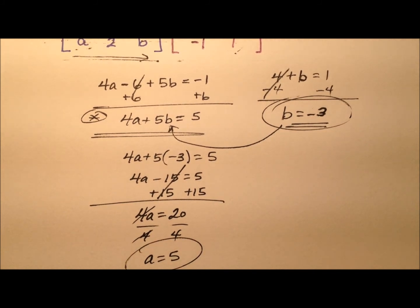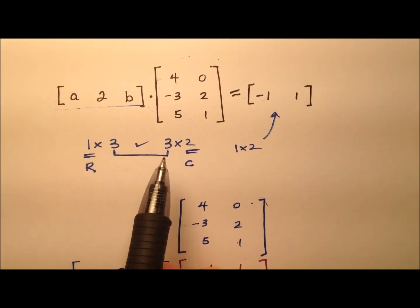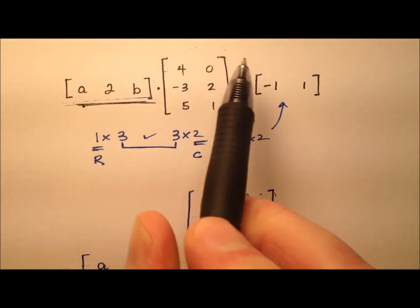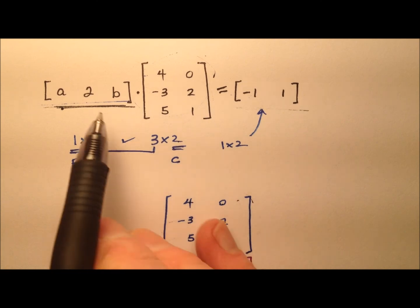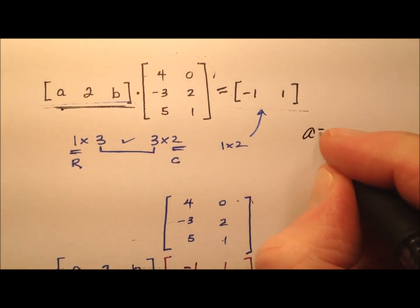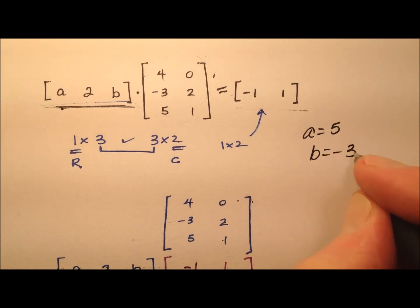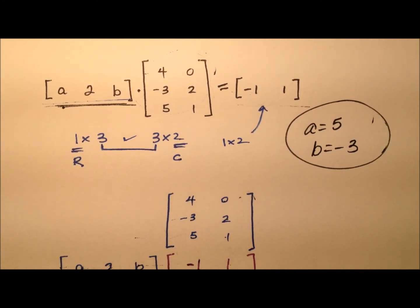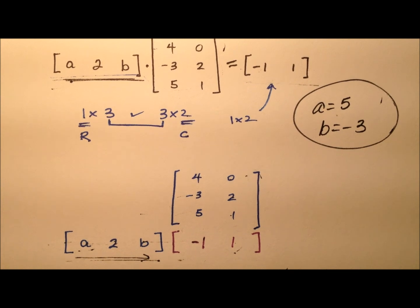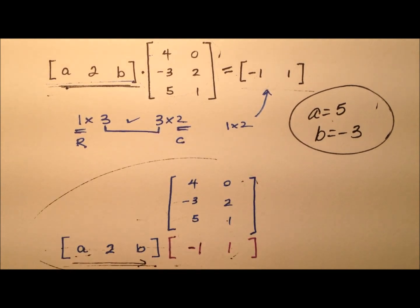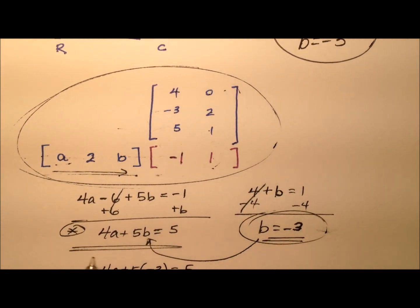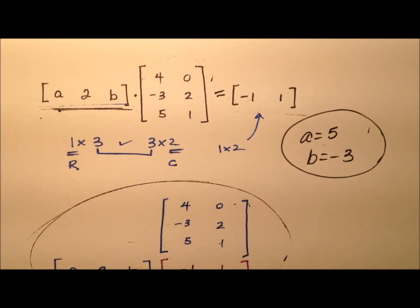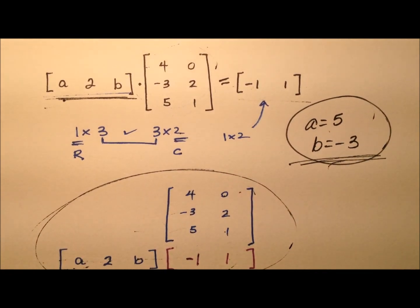So in our case of this matrix equation, I take this matrix, which was a one by three, multiplying by this three by two matrix, I end up with this one by two product matrix, and this whole thing is true as long as my value of A is five, and my value for B is negative three. And if you want to, you can go ahead and plug those back in and ensure that they work. But ultimately, what we did was we walked through this multiplication procedure or algorithm, and we wrote a couple of equations based on all the information that we knew, and then we just solved that system of equations to get these two values for our variables.